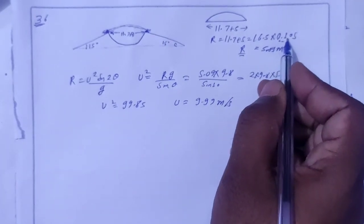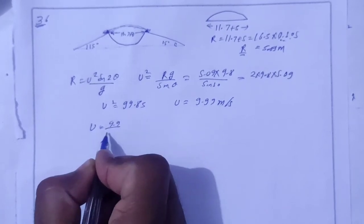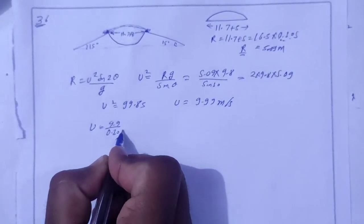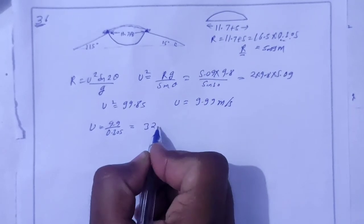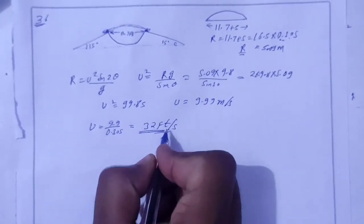To convert to feet, divide by 0.305. So 9.9 divided by 0.305 gives 32 feet. 32 feet per second is the speed of the bike.